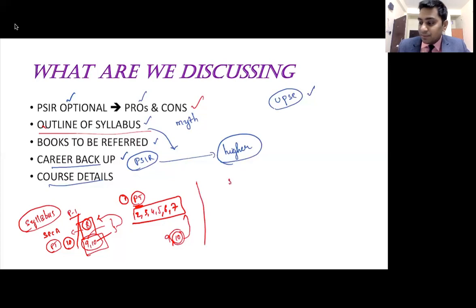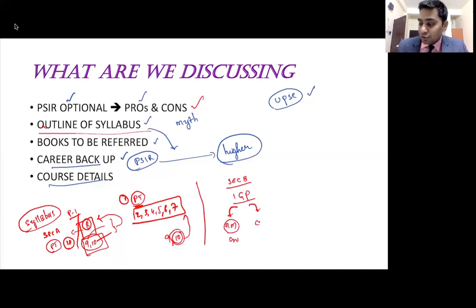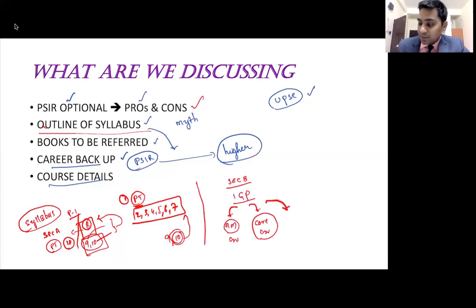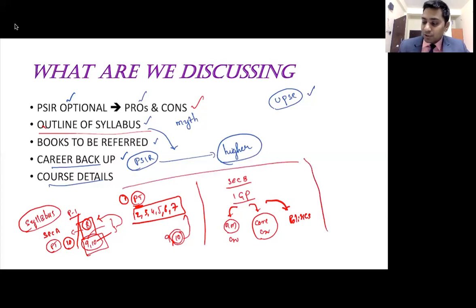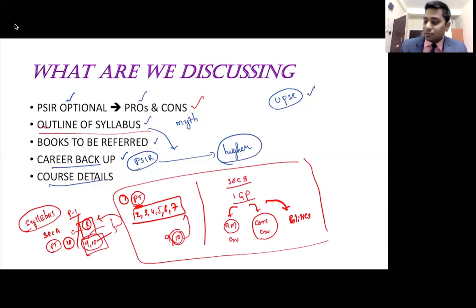Section B of Paper One contains Indian Government and Politics (IGP). There are three ways to remember this syllabus: the first is the national movement and constitutional formation; the second is constitutional philosophies — how the constitution gave structure to the country and the three-tier administration; and the third is about politics and political developments in the country. The basic book you can start with is the Tamil Nadu administrative service book, then slowly enhance your understanding further.